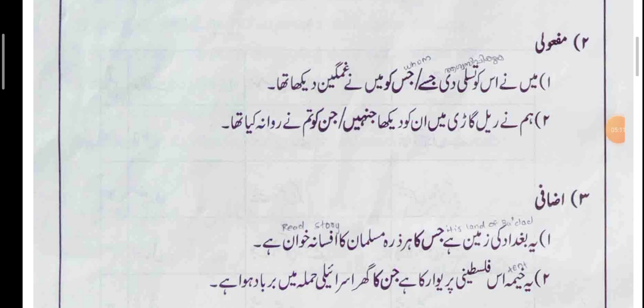The second type: if Isme Maasool comes as an object (مفعول), how do we find it? First example: میں نے اسے تسلی دی جس کو میں نے غمگین دیکھا — I consoled a person whom I saw sad. This is the shape of Isme Maasool in مفعولی (object) condition. If Isme Maasool comes as مفعول, it will be جسے یا جس کو in singular.